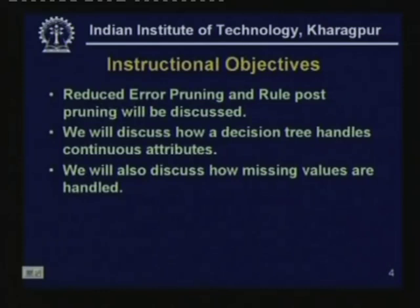We will discuss how a decision tree can be made to work with continuous valued attributes. We will also discuss how missing values are handled in training data where the data is incomplete — some attributes have missing values. Before we start, let us review what a decision tree is and look at an example decision tree that we considered in the last class.